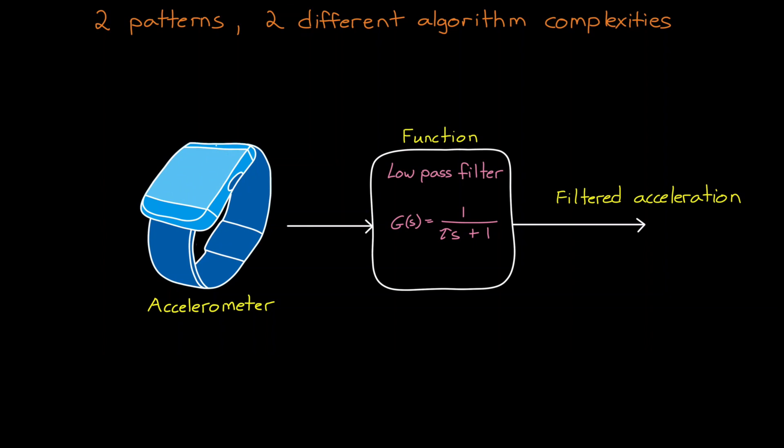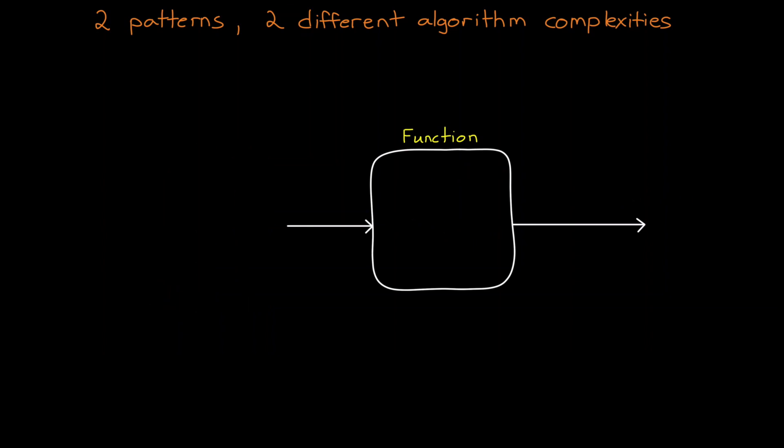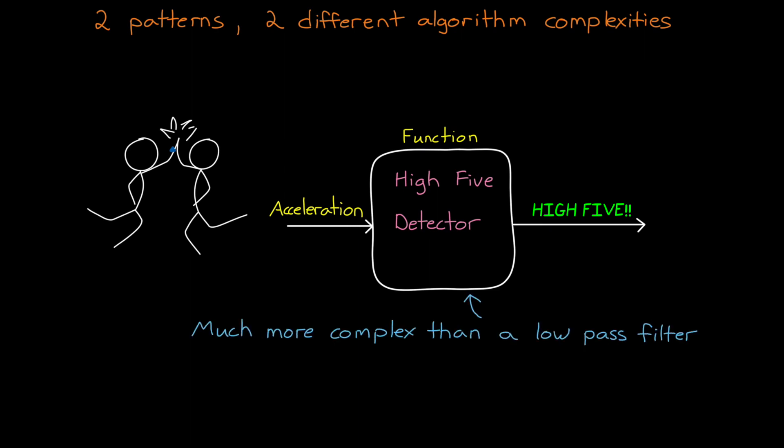But now, let's look at a case where the pattern we're looking for is more abstract. Perhaps we want to use the accelerometer to determine when the user high-fives someone. In this case, the input into our function is still acceleration, the exact same data as before, but the output is a flag that is set when a high-five pattern is detected. The function that does this classification is decidedly more complex than a simple low-pass filter, because the pattern it's looking for is more complex.